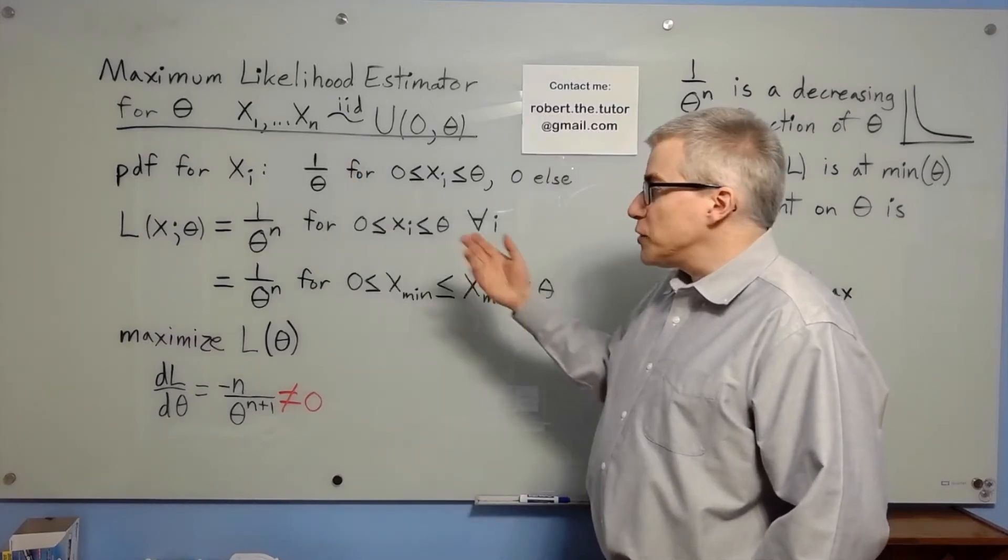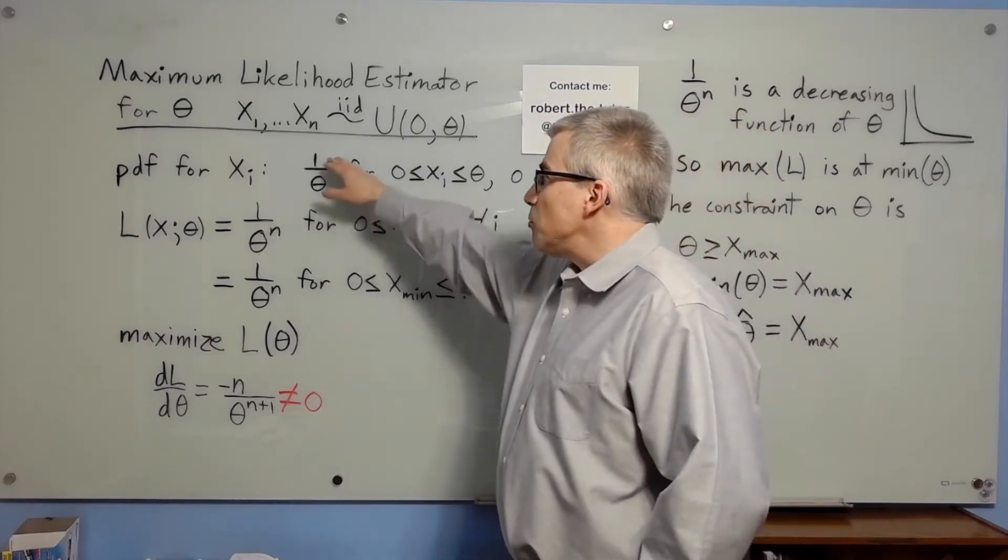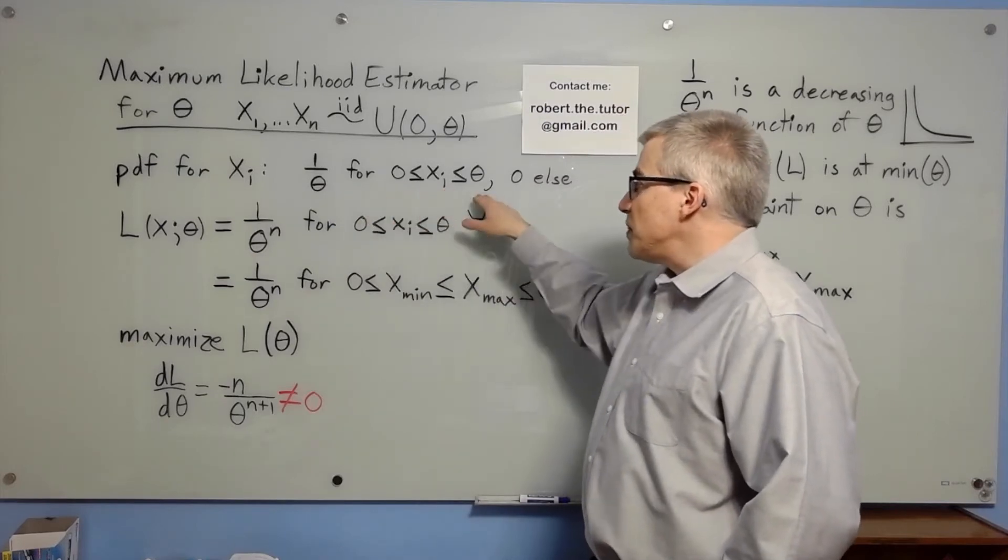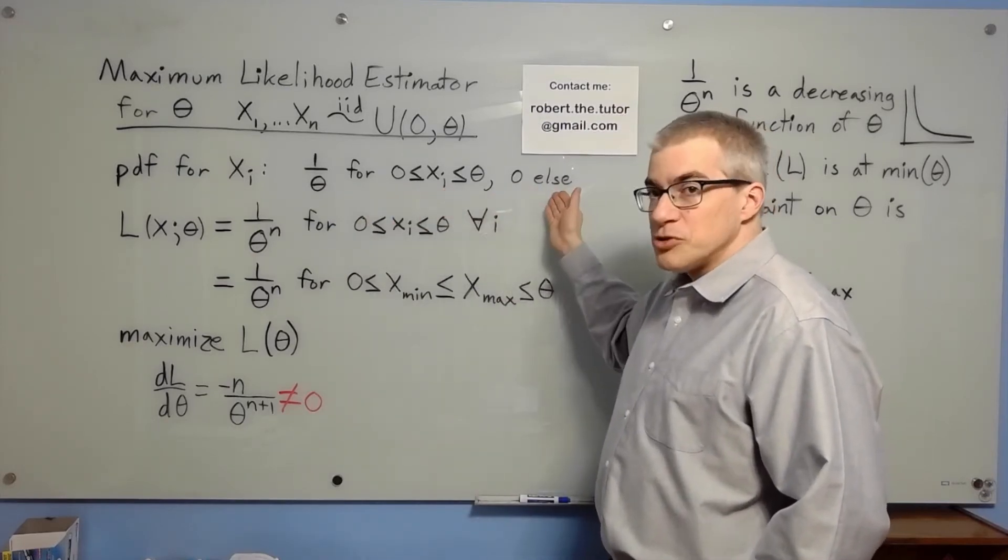The PDF for each of the xi's is going to be 1 over theta for xi between 0 and theta, and 0 elsewhere. That's a uniform distribution.